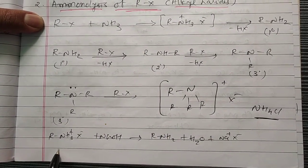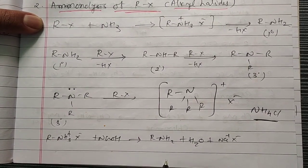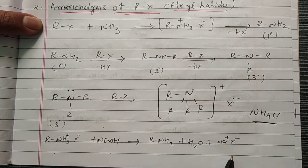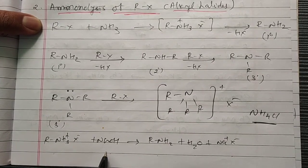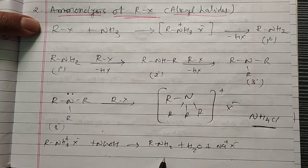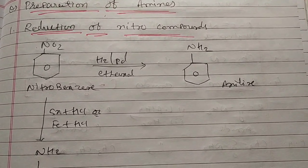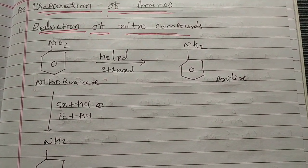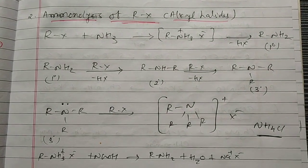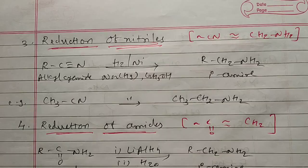Ammonolysis means R-NH3⁺ X⁻. So if you do hydrolysis with NaOH, you will get primary amine, that is RNH2 plus H2O and NaX is released. So this quaternary ammonium salt when treated with alkali means hydrolysis, you get your primary amine. So this is all about your two preparations. First is reduction of nitro compound where nitrobenzene is converted into aniline, and second is ammonolysis where Rx is treated with ammonia and converted into primary, secondary, tertiary and last quaternary ammonium salts.